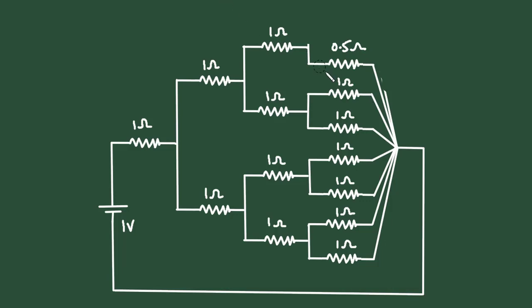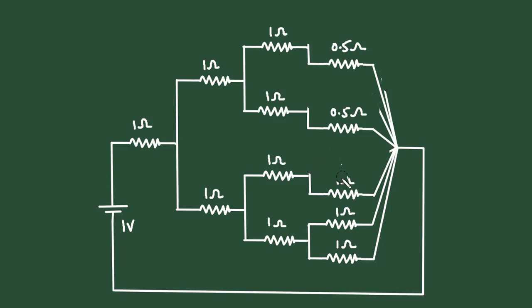Same for the remaining pairs: each will also be 0.5 ohm. So this will be 0.5 ohm, this will be 0.5 ohm, this will be 0.5 ohm, and this will be 0.5 ohm.